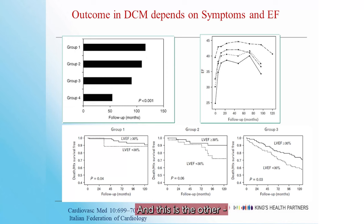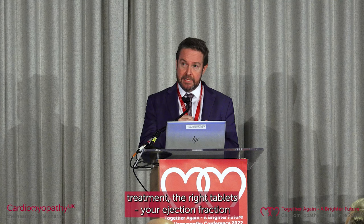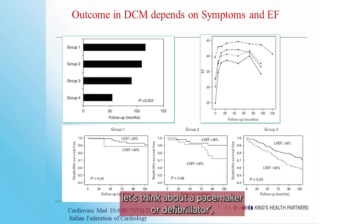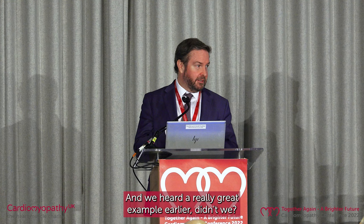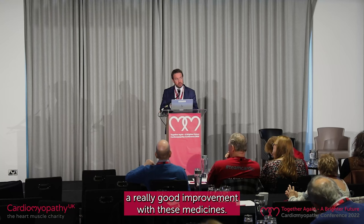When we come to ejection fraction: if you have a dilated cardiomyopathy and you're put on the right treatment, the right tablets, your ejection fraction will probably go up by about 15%. So if you've got a low ejection fraction and people are saying let's think about a pacemaker or a defibrillator, you need to wait three or six months most of the time, because a lot of the time you see a really significant improvement. So wait before you have your defibrillator or your pacemaker, because you often see a really good improvement with these medicines.